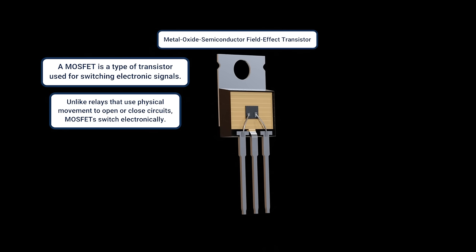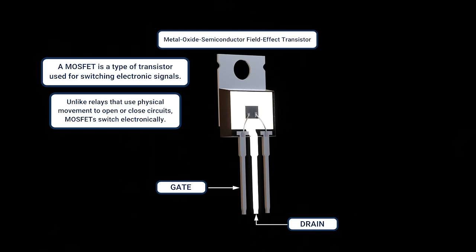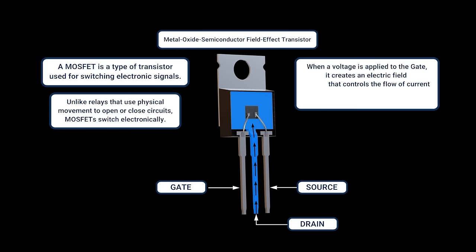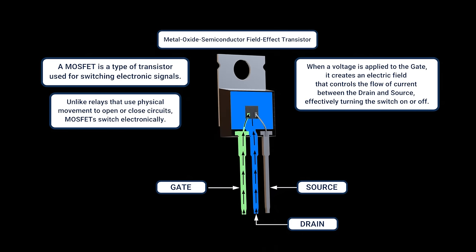They have three main components, the gate, the drain, and the source. When a voltage is applied to the gate, it creates an electric field that controls the flow of current between the drain and the source, effectively turning the switch on or off, similar to a relay.